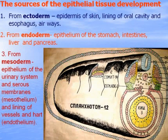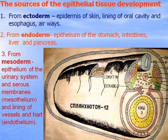The sources of epithelial tissue development in embryogenesis: it is derived from all three germ layers. From ectoderm: epidermis of skin, lining of the oral cavity, esophagus, and partly airways. From endoderm: epithelium of the stomach, intestine, and lining of the pancreas. From mesoderm: epithelium of the urinary system, serous membranes, as well as the lining of vessels and the heart.